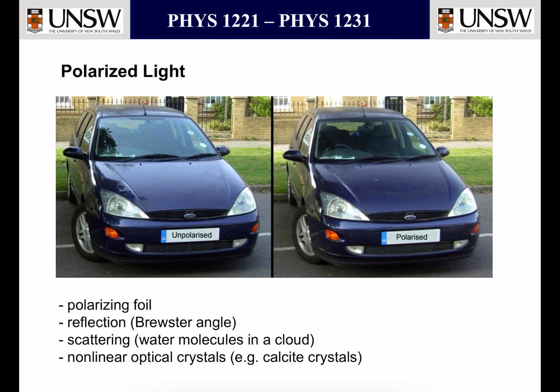In the first picture I would like to show you the effect of polarized light. First of all, how can we polarize light in general? We can use a polarizing foil — I've discussed that in the lecture — or using the Brewster angle where one component of light is actually not reflected at all. Scattering on water molecules also polarizes light, and that's actually done, for example, in clouds in the sky. And we can use non-linear optical crystals where one component of light is actually partly suppressed.